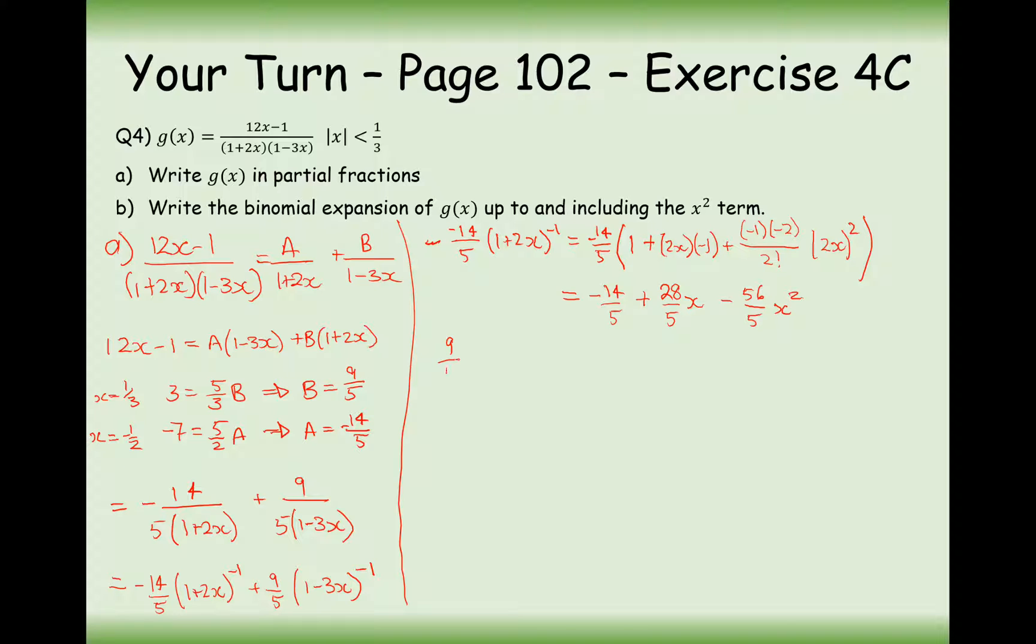Okay, we've done this one now. Now on to the next one. 9 over 5 times 1 minus 3x to the power of minus 1. So we'll leave the 9 over 5 at the front. And in this case here, it's going to be 1 plus minus 3x times by minus 1, and the next term is going to be minus 1 times minus 2, all over 2 factorial, times by minus 3x all being squared.